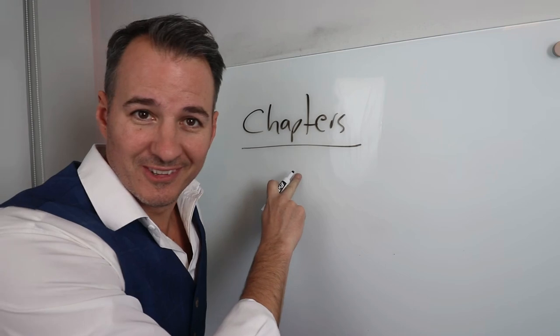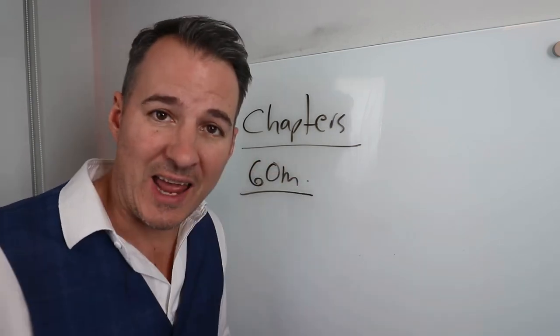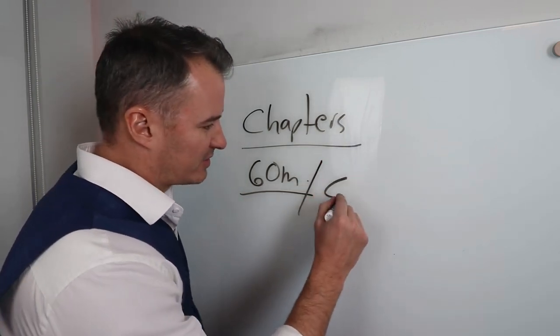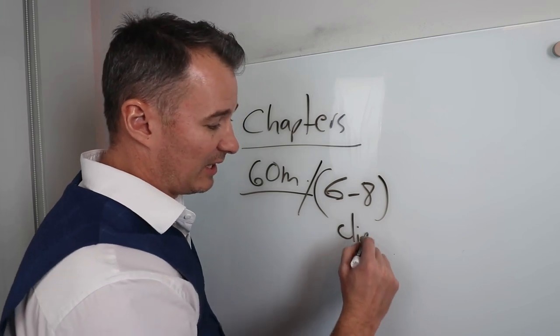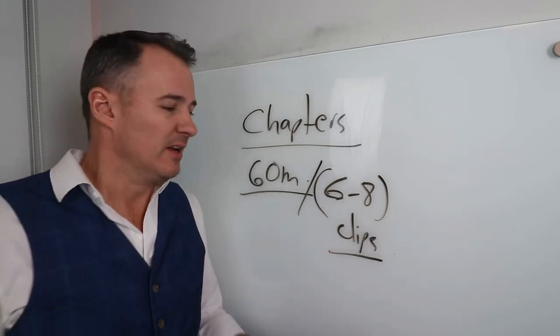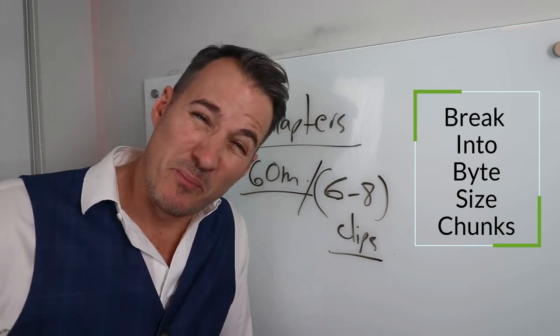So if you have 60 minutes of content, you essentially have six to eight little clips that are roughly the five to eight minute chunks. And this is probably the biggest mistake I see.